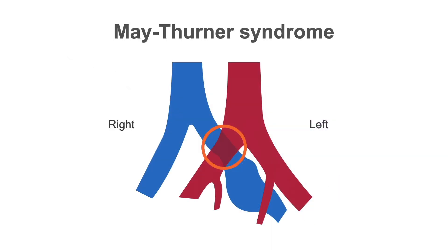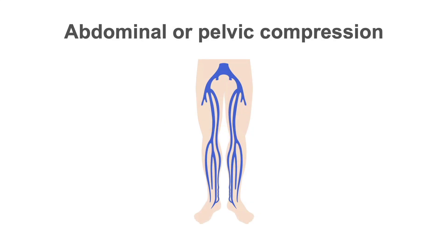There is something called May-Thurner syndrome, in which the right common iliac artery overlies and causes compression of the left common iliac vein. This compression can lead to venous obstruction and left lower limb edema or thrombosis. And of course, any intra-abdominal or pelvic tumor, mass, or fluid collection could compress central veins and cause distal swelling.